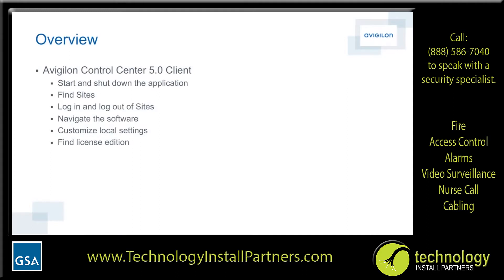The objective of this module is to help you get started using the Avigilon Control Center client software. We will talk about how to start and shut down the client software, how to find sites, how to log in and log out of sites, how to navigate through the software, how to customize your local settings, and how to find the software edition that your system is running.